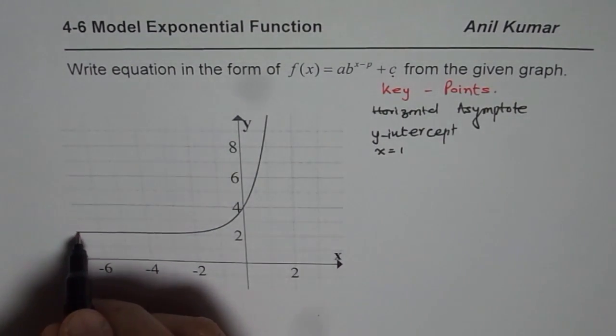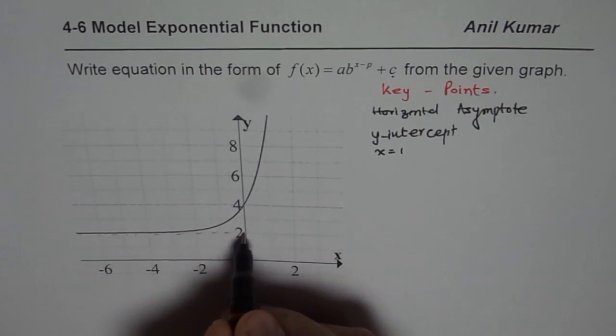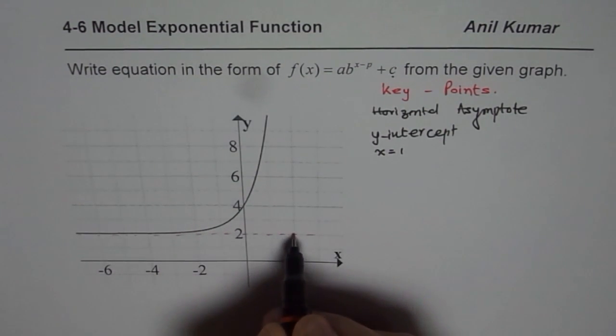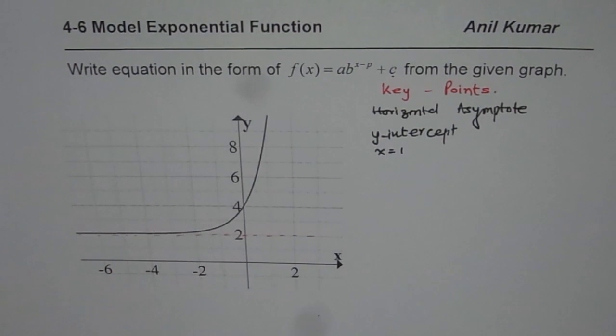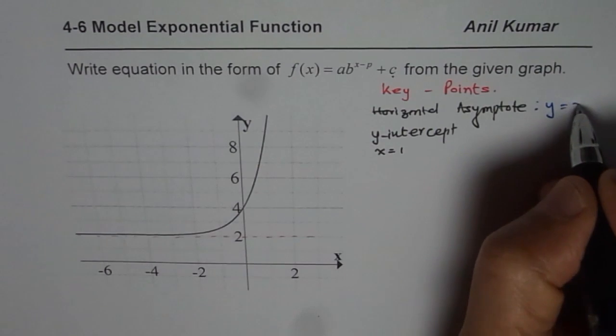The horizontal asymptote: what we can see here is that the horizontal asymptote for us is at y = 2. So we can write down that horizontal asymptote is y = 2.